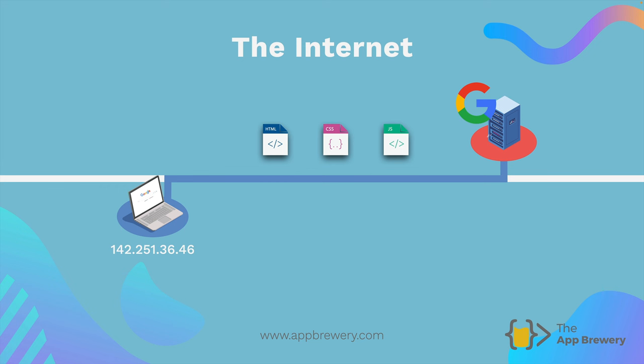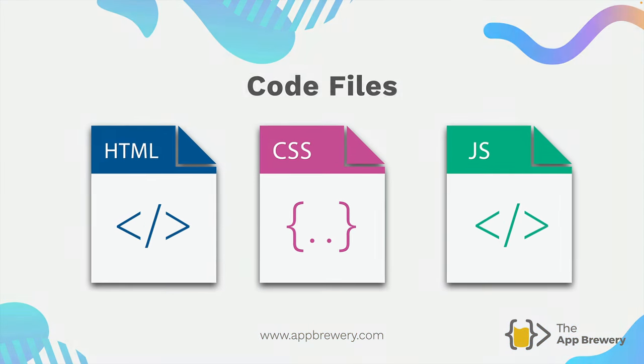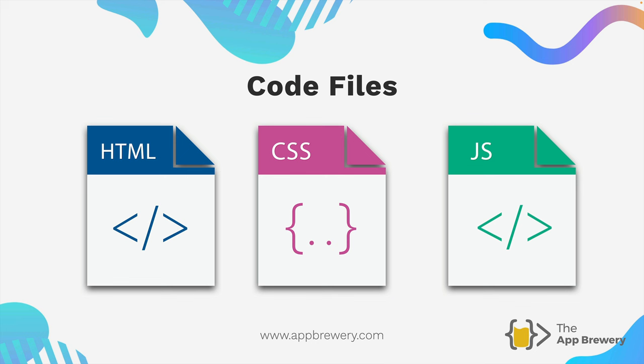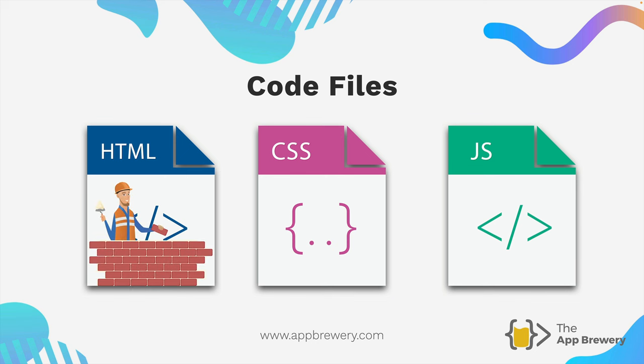Why can't we just have one file that's a website? Well, they actually have very different jobs. For example, the HTML code file is responsible for the content in your website. So if a website was a house, then the HTML would be the actual bricks of the house — it's the raw materials that make up your house. Similarly, the HTML file contains the content of your website like the text content, images, buttons, or links.